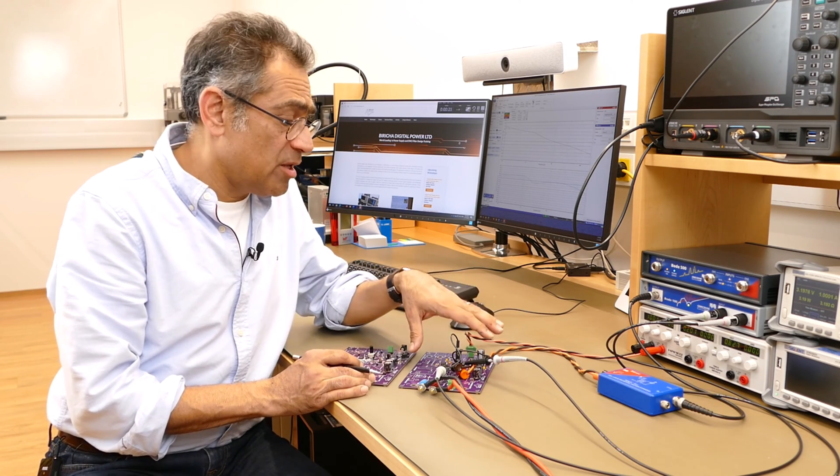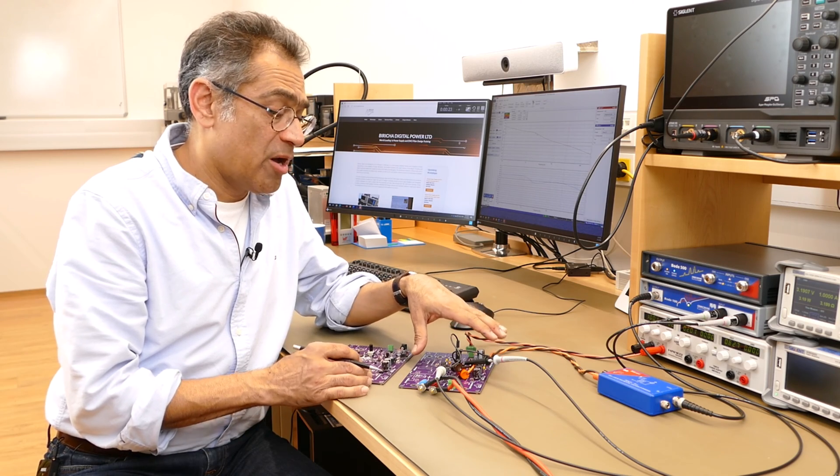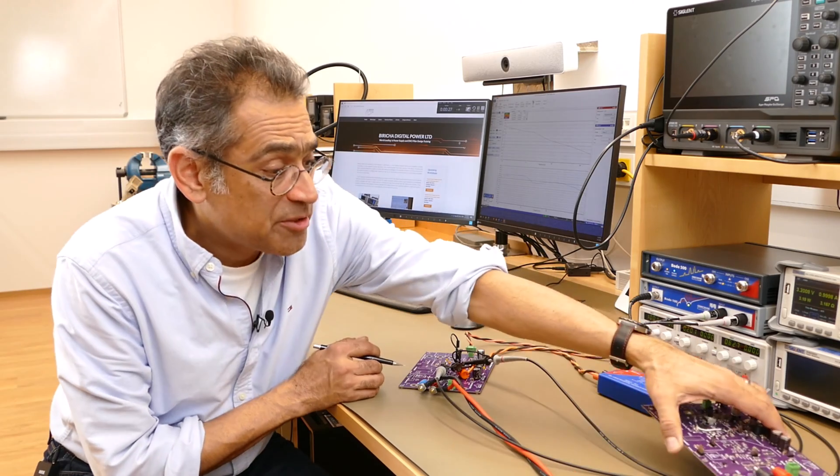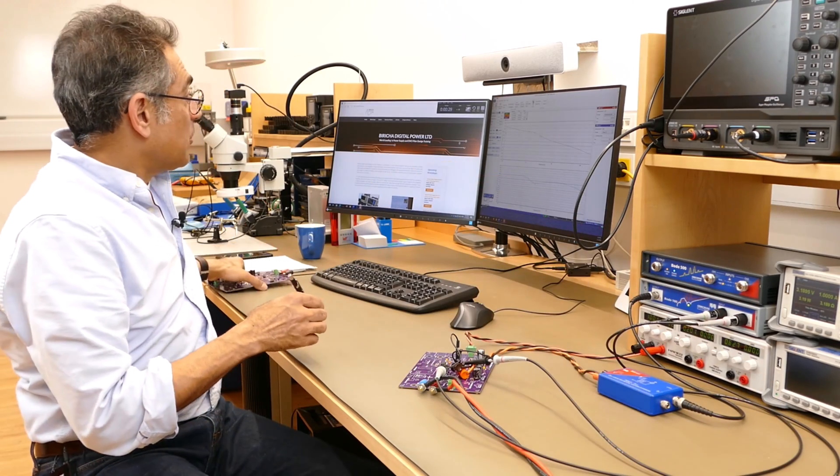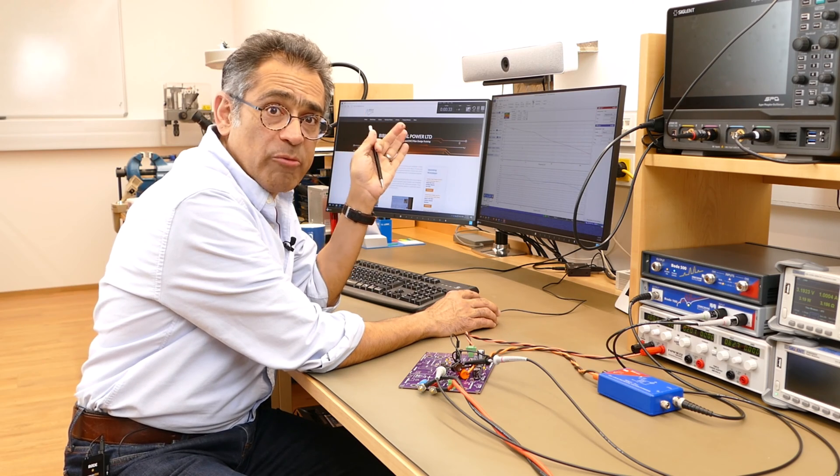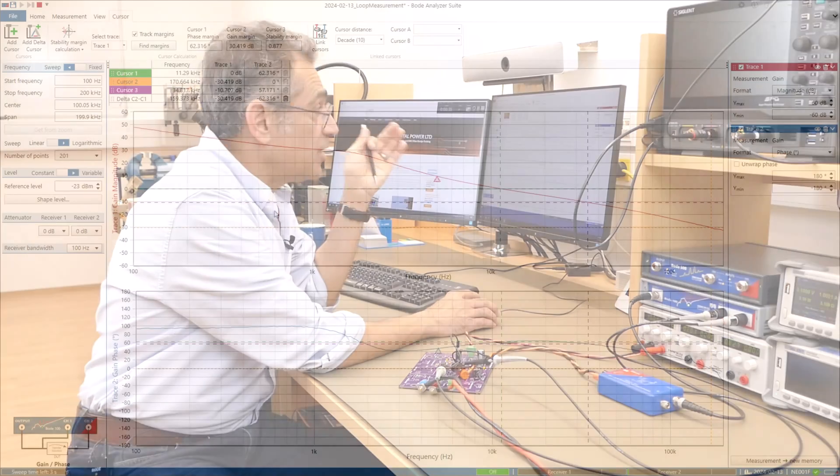At the moment I'm measuring the control loop of my voltage mode and then we're going to measure the current mode a little bit later. But for now I'd just like to point out how the crossover frequency of my loop on the voltage mode changes.